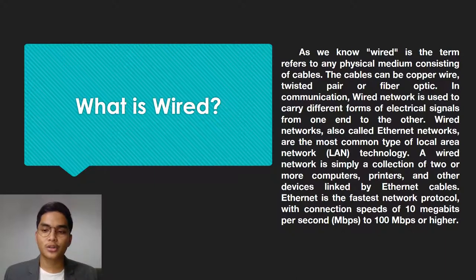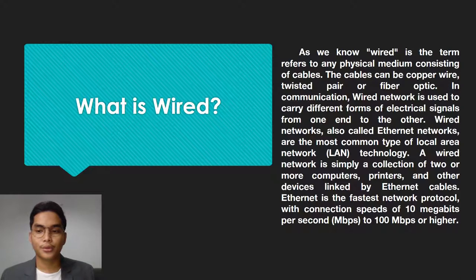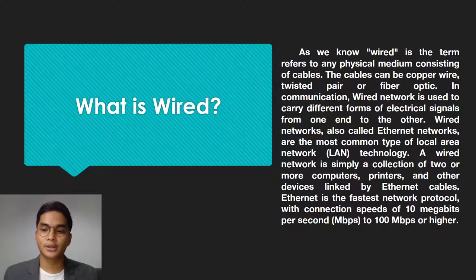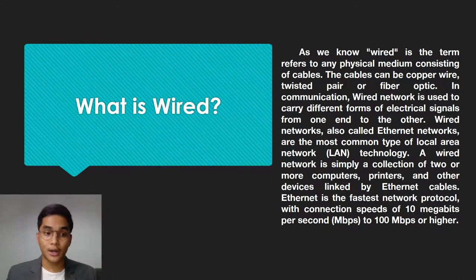Wired networks, also called ethernet networks, are the most common type of local area network or LAN technology. A wired network is simply a collection of two or more computers, printers, and other devices linked by ethernet cables. Ethernet is the fastest network protocol with connection speeds of 10 megabytes per second to 100 megabytes or higher.